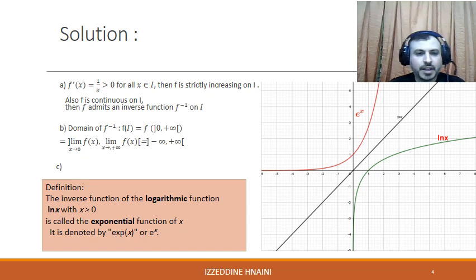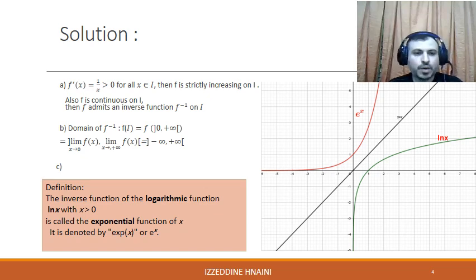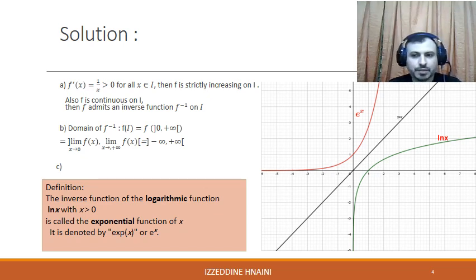Second part: the domain of the inverse function is the image of the interval (0, +∞). Since it is an increasing function, it is equal to the interval from the limit as x tends to 0 of ln(x) to the limit as x tends to +∞ of ln(x), which gives (−∞, +∞).